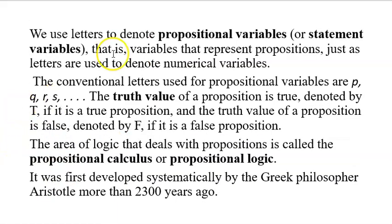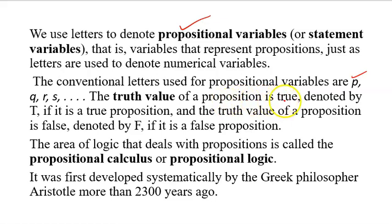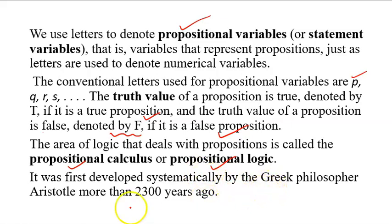To denote propositions, we use letters called propositional variables. The conventional letters used are small p, q, r, and s. The truth value of a proposition is true, denoted by T, if it is a true proposition, and false, denoted by F, if it is a false proposition. The area of logic that deals with propositions is called propositional calculus or propositional logic, first developed systematically by Greek philosopher Aristotle more than 2300 years ago.